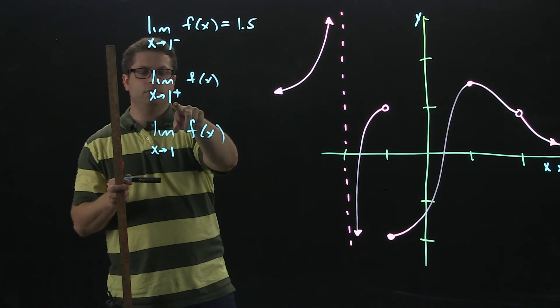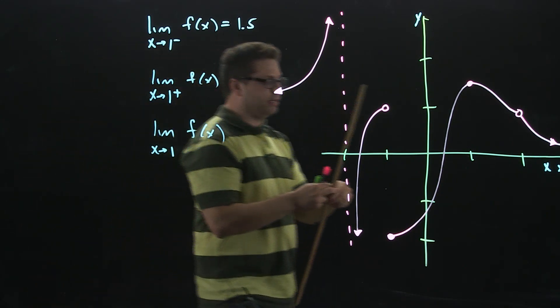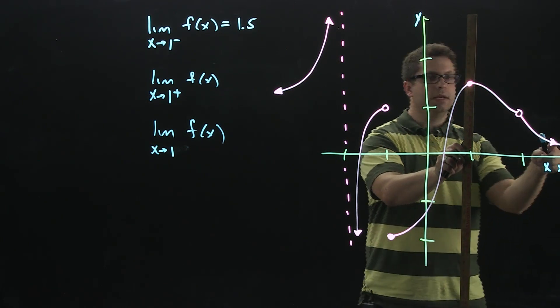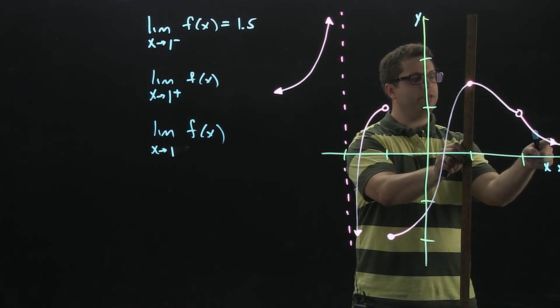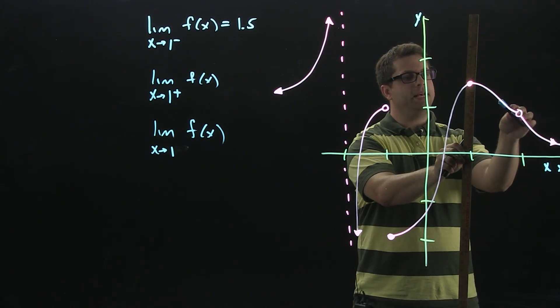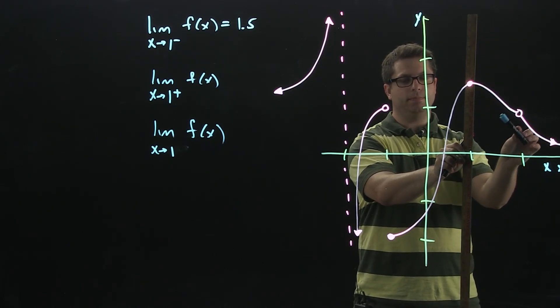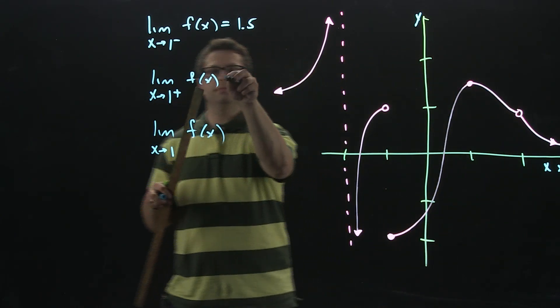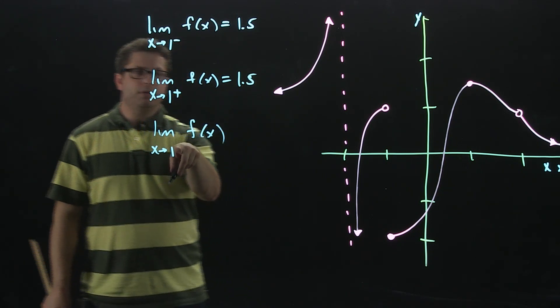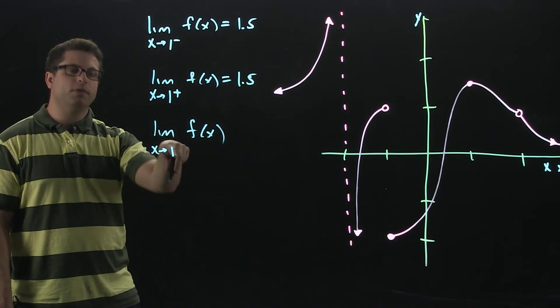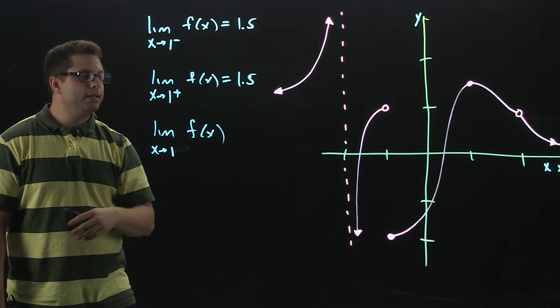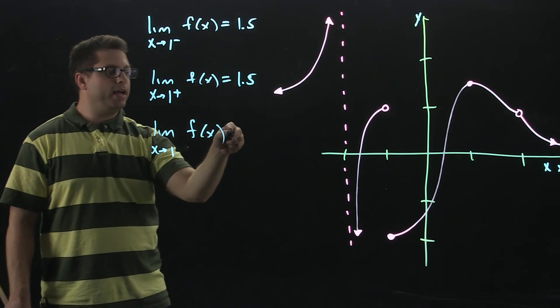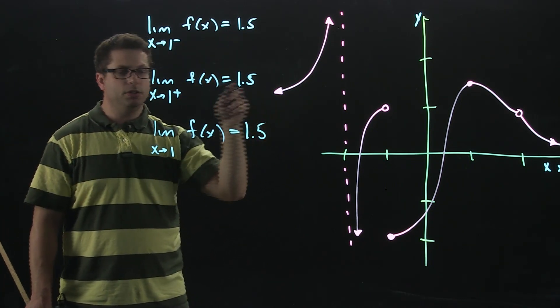For this one, I need to approach 1 from the right. Same thing, I'm going to put the ruler at 1. As I approach x equals 1 from the right, I look like I'm going right here. That's also at 1.5. This one is the general limit. That means the general limit exists if the left and right-hand limits matched. Since the left and right-hand limits equaled 1.5, I'm going to go ahead and say the general limit also 1.5.